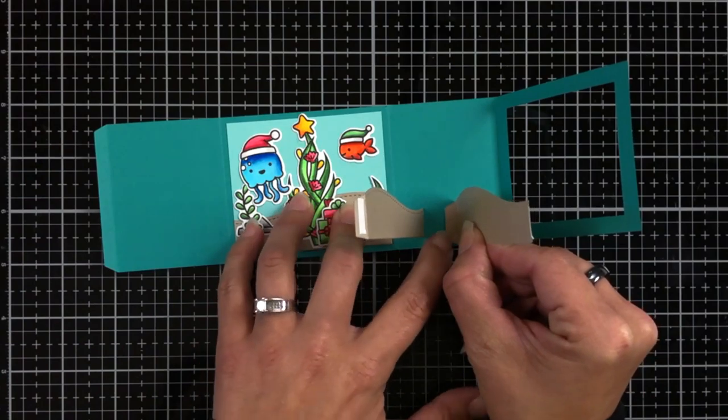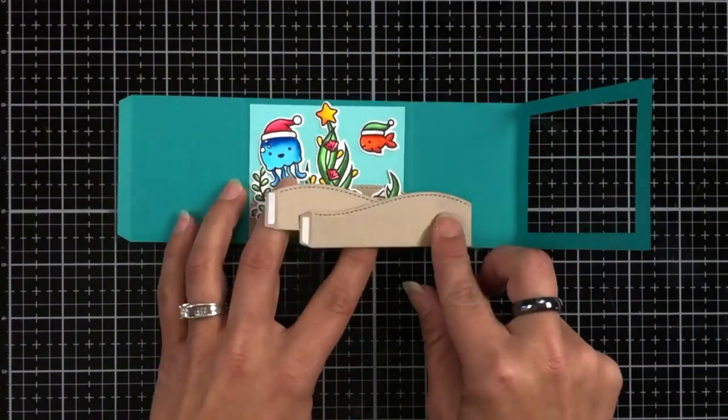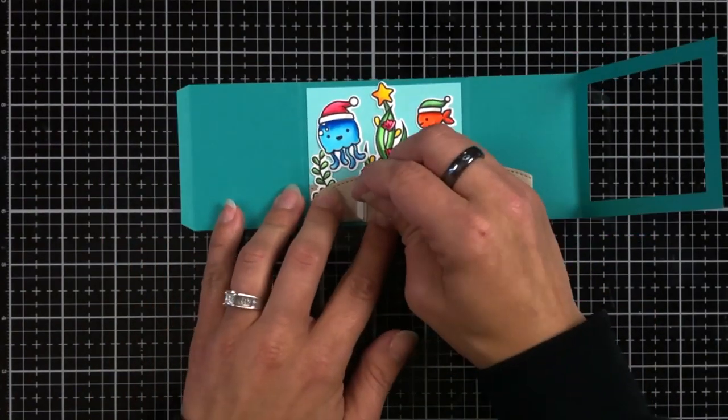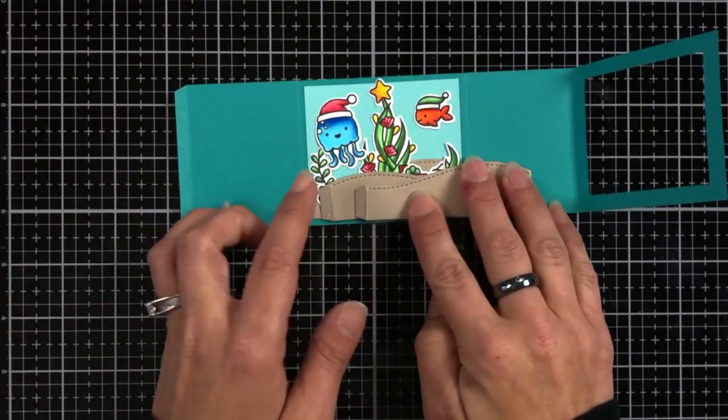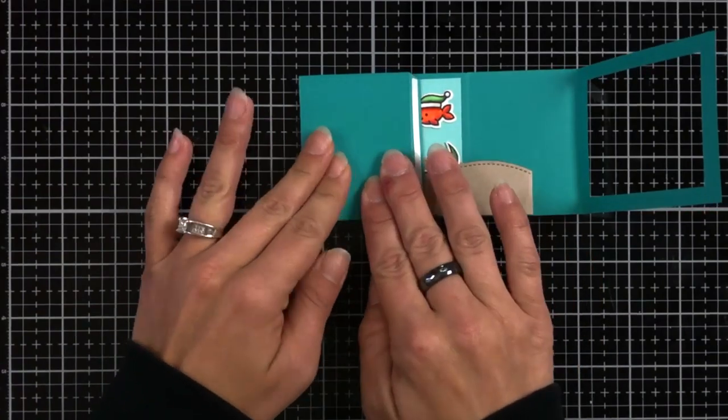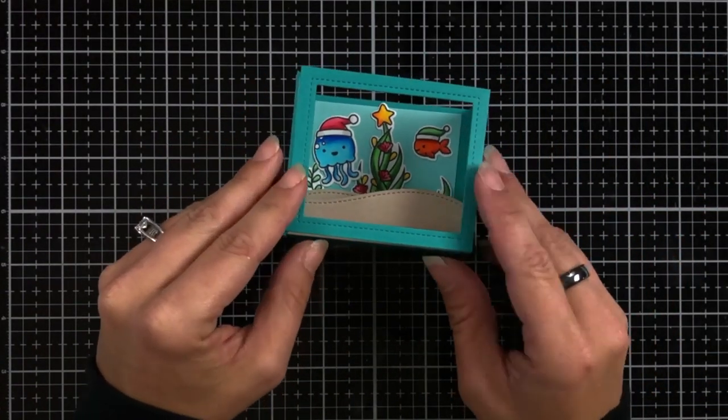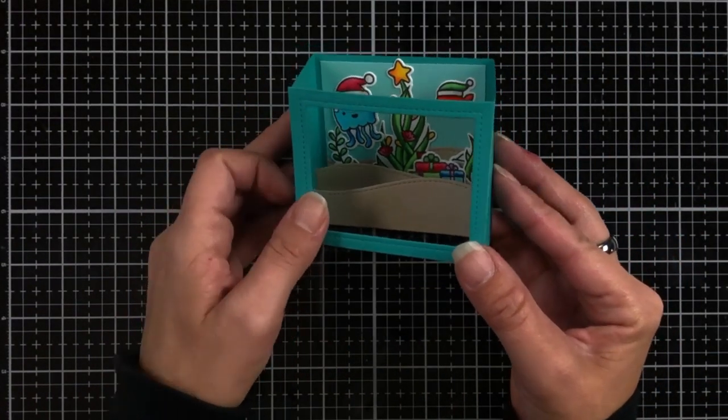Now I didn't push down real hard right away because I wasn't sure how high it would be. I wanted to make sure it was in perfect placement. Then once I'm happy with that, I'll remove that backing, fold over that left side, and that's going to attach both of our inserts together.